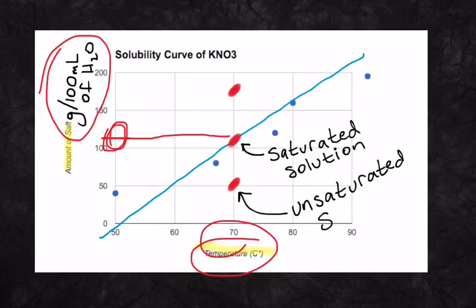If I put about, what is this, maybe about 50 grams of potassium nitrate in 100 milliliters of water at 70 degrees Celsius, I'm going to have an unsaturated solution. So if an amount falls below that line, you'd have an unsaturated solution.